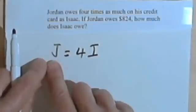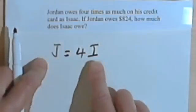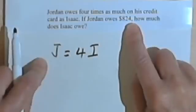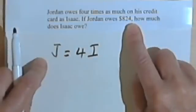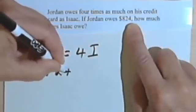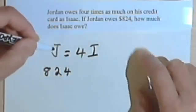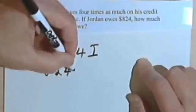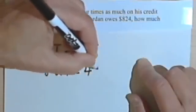This looks right. Jordan's amount is four times Isaac's amount. Now it also tells me that Jordan owes 824 dollars. So instead of the J, we can put in the amount that Jordan owes, the 824, and then just copy the rest of the equation.